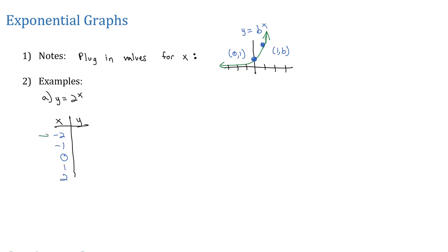Plugging these values in for our x, we'll end up with 2 to the negative 2 power, which is 1 over 2 squared because of the negative exponent, or 1 fourth. Plugging in negative 1, we get 2 to the negative 1 power, and that negative exponent becomes 1 over 2 to the first, so we just have 1 half. Plugging in 0, anything to the 0 power is 1. So 2 to the 0 power equals 1. Plugging in 1, 2 to the 1st power equals 2. And plugging in 2, 2 to the 2nd power equals 4.